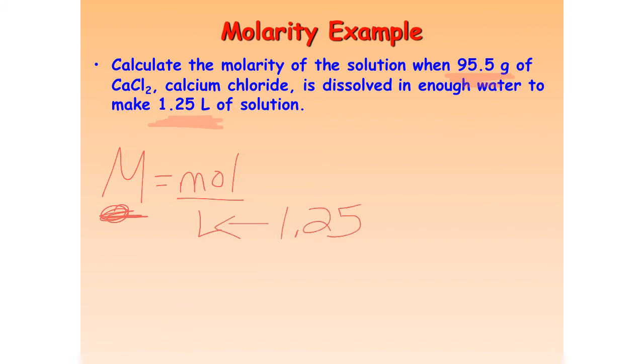We don't have moles, but what we do have is grams. We can convert from grams to moles using the molar mass. So we have 95.5 grams over 1, and then our molar mass is going to go on the bottom, 1 mole on top. So our molar mass of calcium chloride is 110.986 grams.